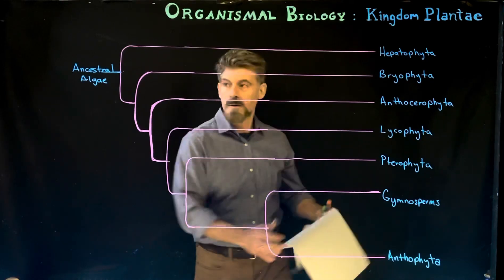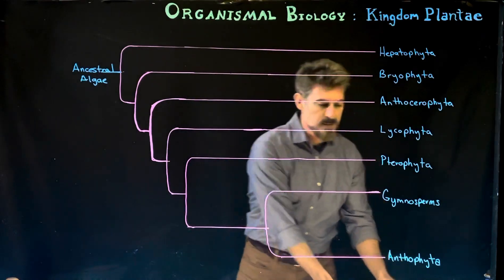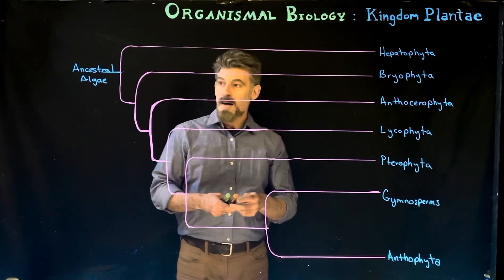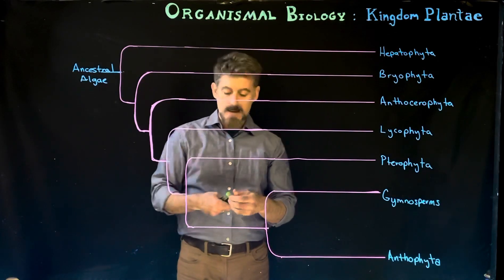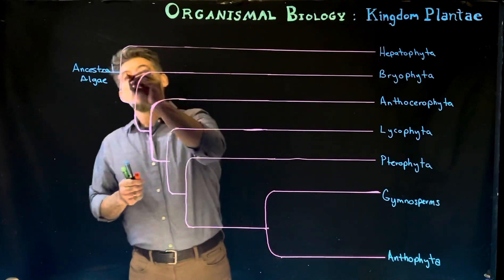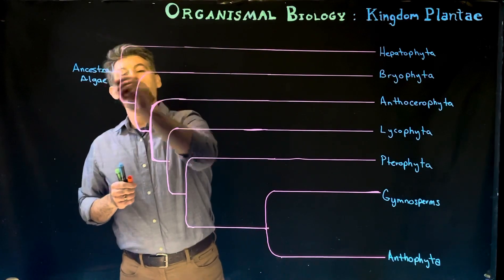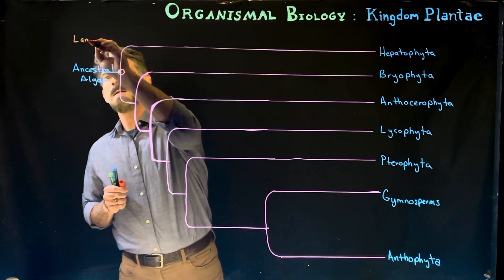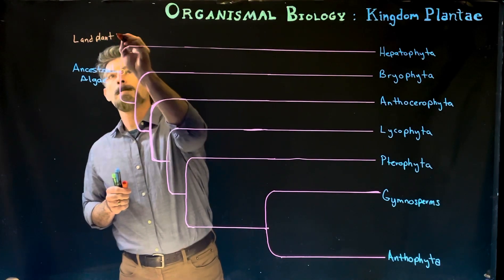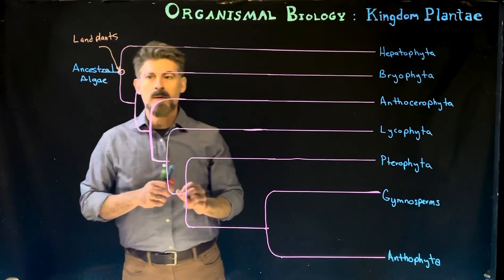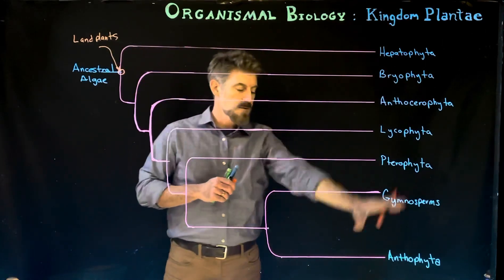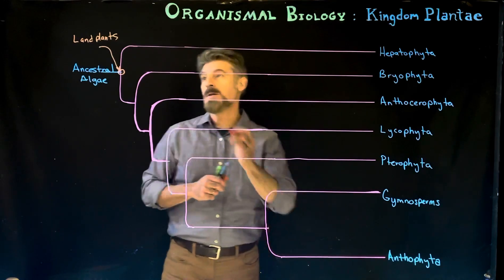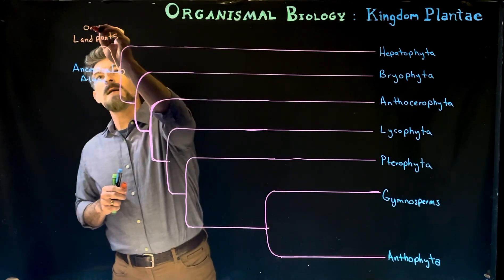What we're going to do right now is look at this tree here, starting off with the ancestral algae. And at this point here, going from ancestral algae to land plants. So that's this branch here. All these members are all belonging to this particular group. Adaptations to land are the origin of land plants.